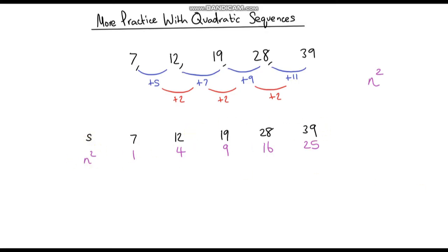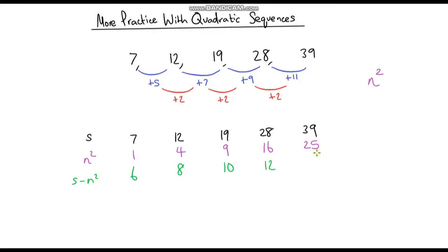So let's do S minus n squared. 7 minus 1 is 6, 12 minus 4 is 8, 19 minus 9 is 10, 28 minus 16 is 12, and 39 minus 25 is 14.